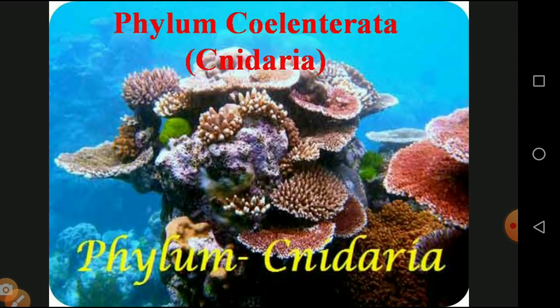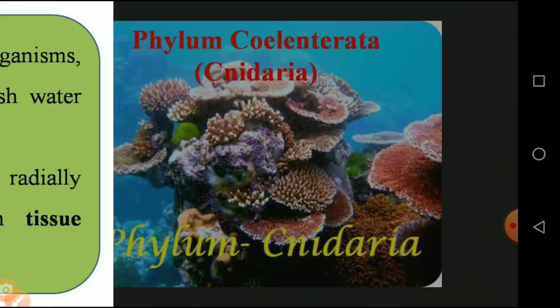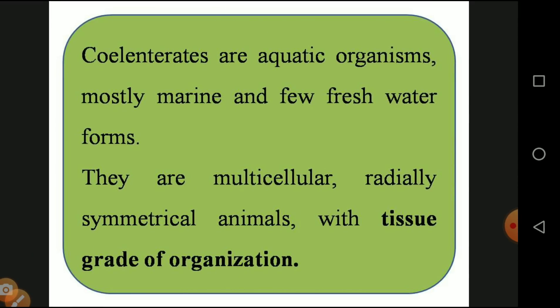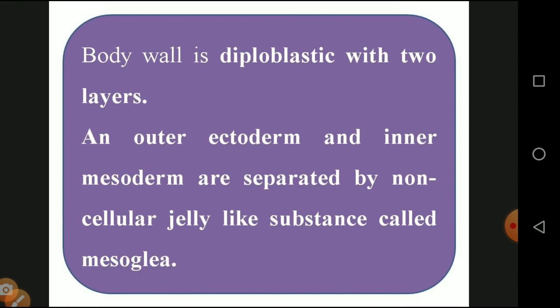The next phylum is Coelenterata, also called Cnidaria. These are aquatic organisms living in water, mostly marine — almost all types of Coelenterata are marine, though a few are freshwater forms living in lakes, rivers, and ponds. They are multicellular and radially symmetrical, meaning we can divide them into two equal halves. They have a tissue grade of organization.